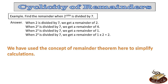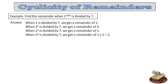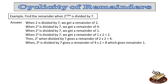Here we have used the concept of remainder theorem. 2 cubed when divided by 7 gives a remainder of 1. 2 raised to the power 4 equals 2 cubed times 2, so it gives a remainder of 1 times 2 when divided by 7. When 2 raised to the power 5 is divided by 7, we get a remainder of 2 times 2, that is 4. When 2 raised to the power 6 is divided by 7, we get a remainder of 4 times 2, that is 8, which again gives a remainder of 1, because 8 when divided by 7 gives a remainder of 1.